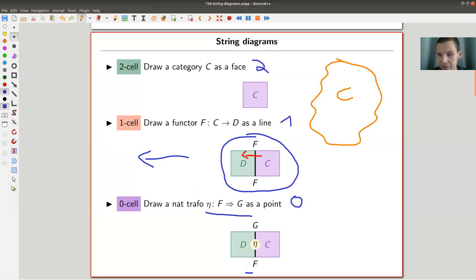So here's my F and here's my G. I should write just the point, but the point's a little bit hard to see on slides. So instead of writing a point, I write this little coupon, which is then labeled with the natural transformation I have in mind. So everything is kind of labeled. You have faces labeled with categories, you have lines labeled with functors, and you have coupons or points, strictly speaking, labeled with natural transformations.